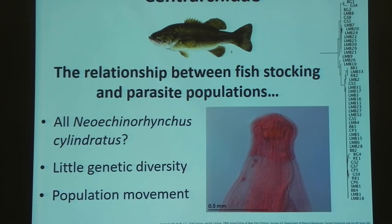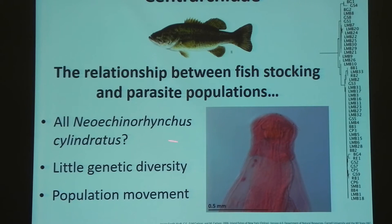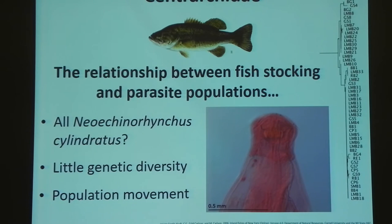Conversely, we have the Centrarchid family, which is very economically important and has had only one species described from it since the beginning of the description of species from this genus. So we do wonder: is this all one species, Neokinorhynchus cylindratus, that has been described from Centrarchids? Or maybe is there a little more diversity in this than we think? That's where the other two genes are going to come in really handy — to parse that out a little bit more.